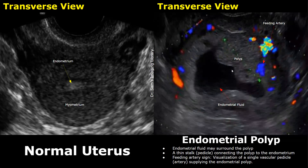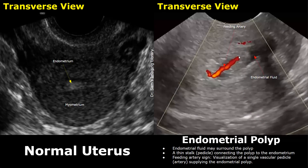Here we have another image showing an endometrial polyp. It is surrounded by a larger amount of endometrial fluid. This mass is larger and there is a single artery seen entering the polyp — this is the feeding artery sign. The feeding artery sign and pedicle are also present in this next image, with a single artery entering the polyp, and some endometrial fluid around the mass.